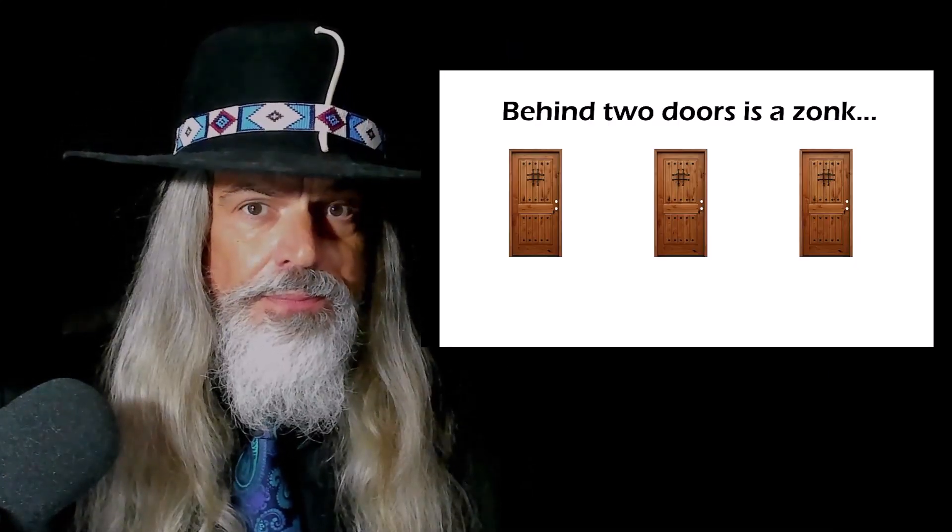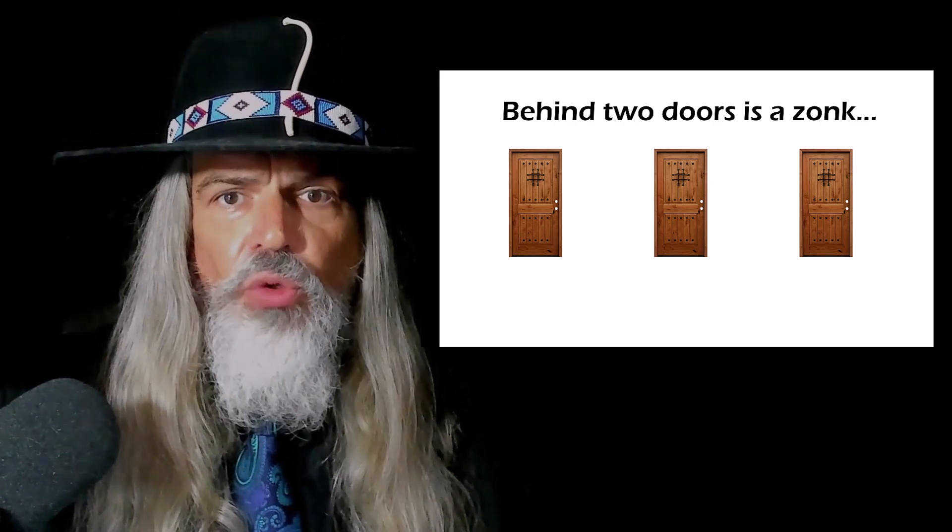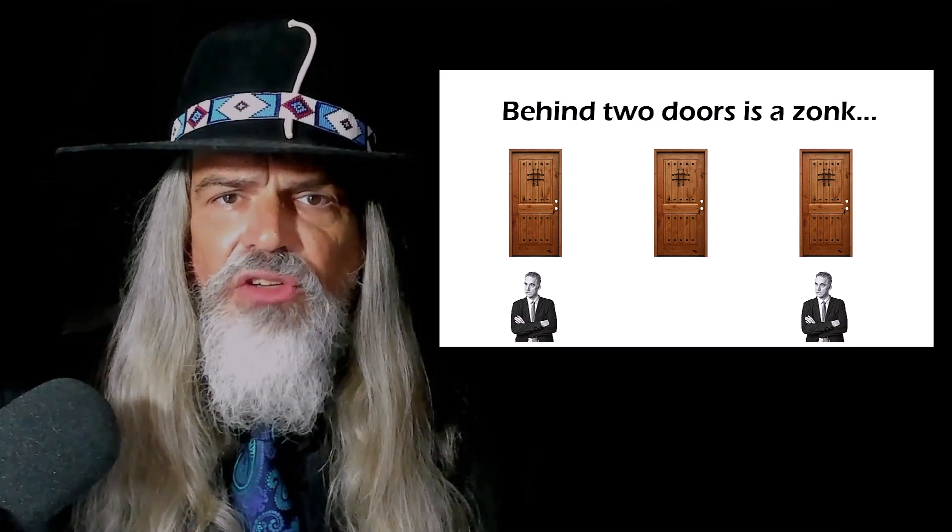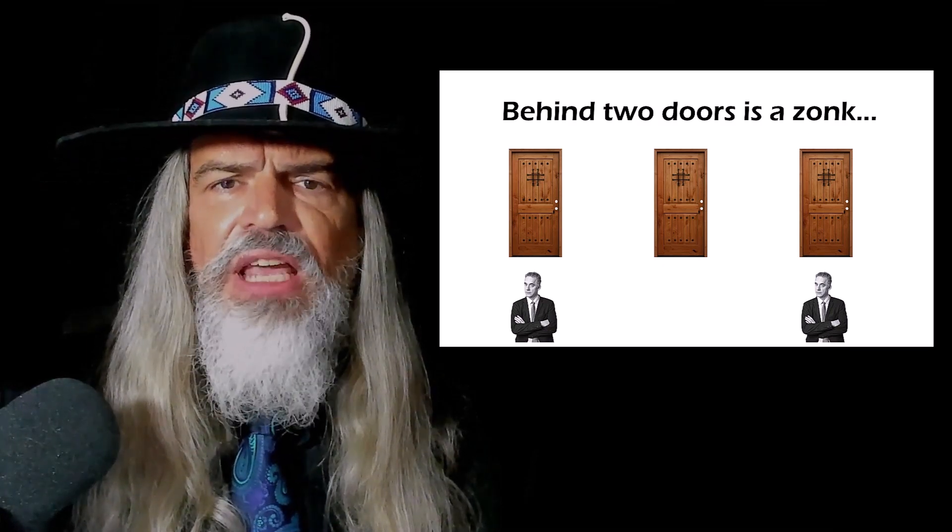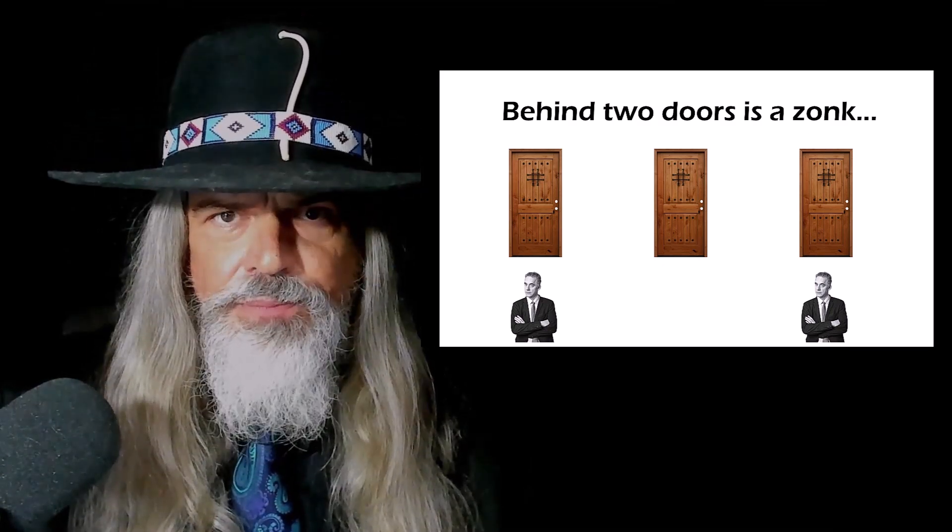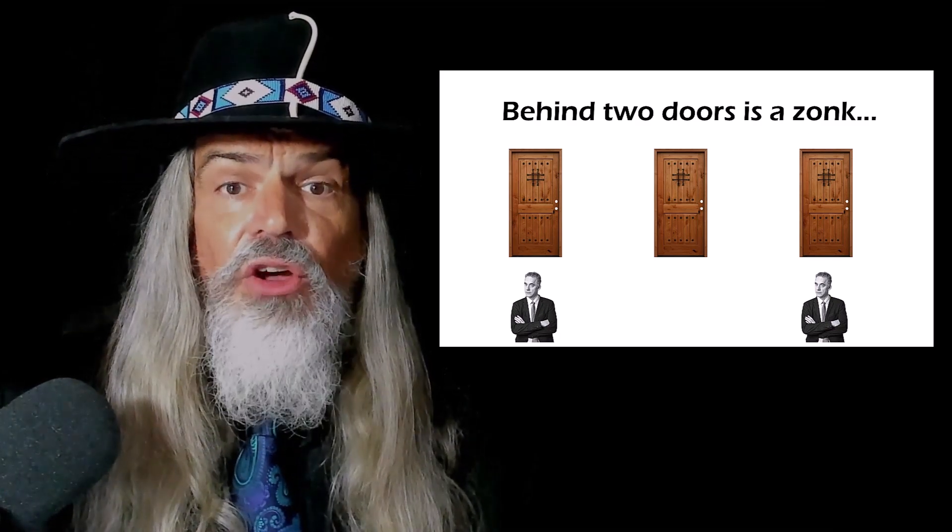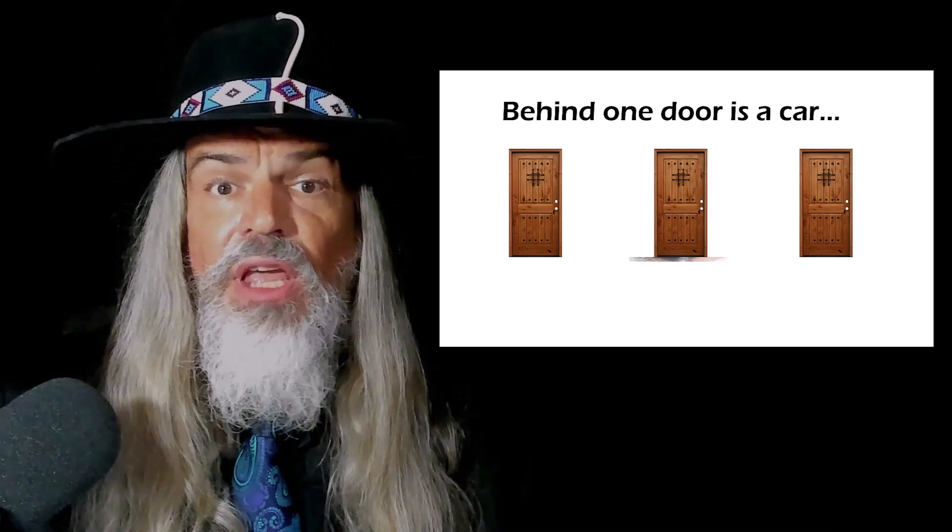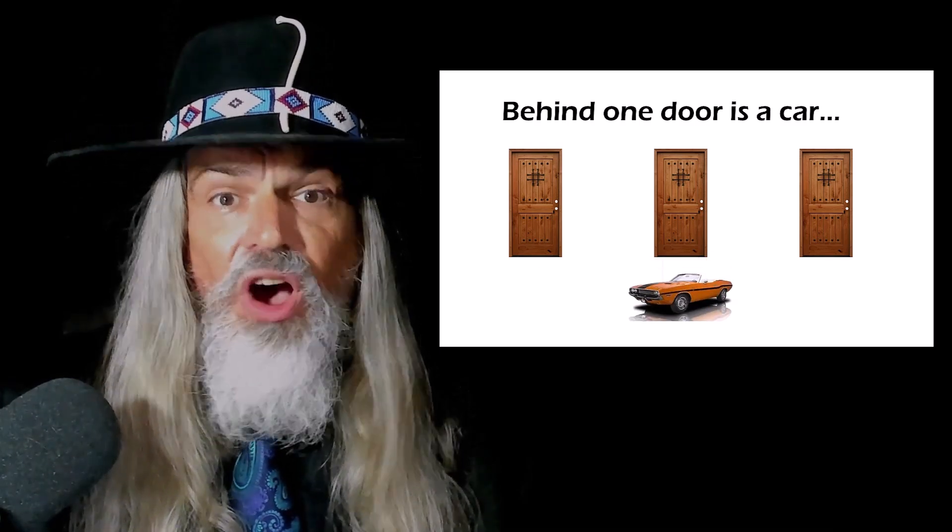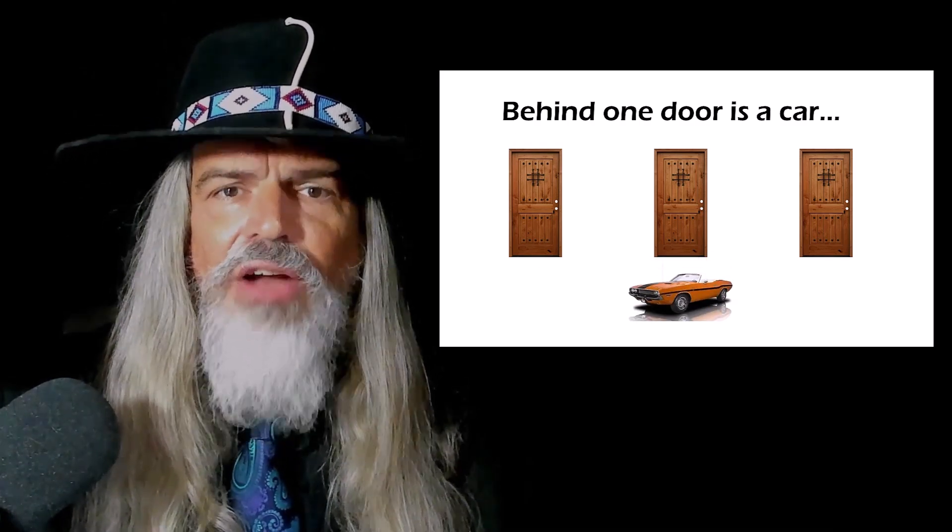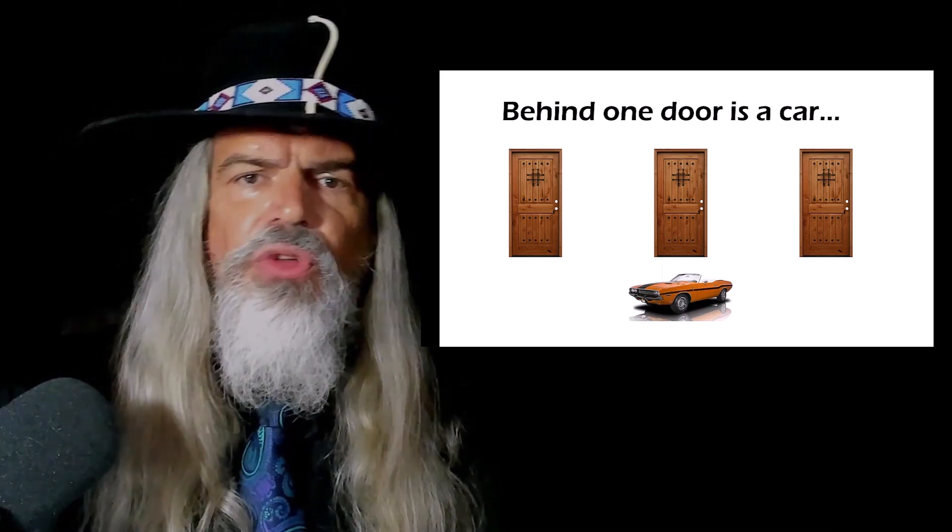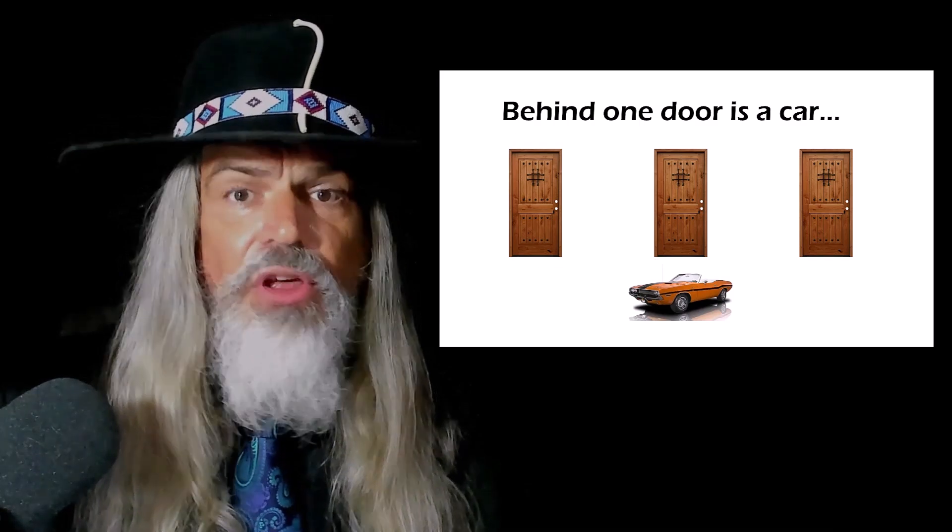I'm going to show you three doors. Behind two of the doors is a zonk. What's a zonk, you ask? A zonk is something you do not want. Behind the remaining door is a new car. If you pick the door with the car, you win the car. Now, Monty asks you to choose one of the doors.